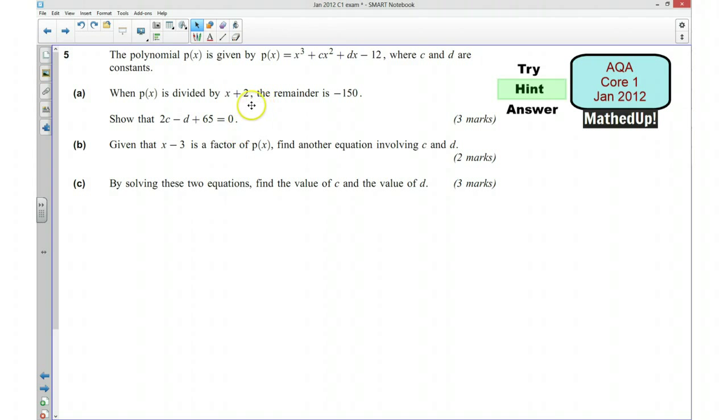So, using the remainder theorem, and the remainder theorem states that if I put in, or if that's x plus 2, I put in negative 2 into this function here, the remainder should be negative 150. So we can use that information to see if we can get this equation.